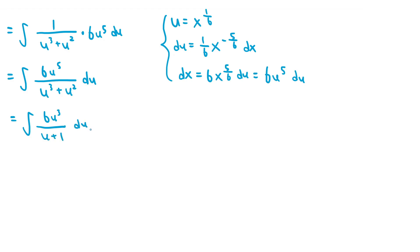We need to be careful when dividing by u squared, because we must ensure we aren't dividing by 0. The integrand 6u to the fifth over u cubed plus u squared is undefined when u equals 0, since the denominator equals 0 there. Since u squared equals 0 if and only if u equals 0, and the function is already undefined at u equals 0, u squared is never equal to 0 on the entire domain of the function, so we can safely divide by u squared.